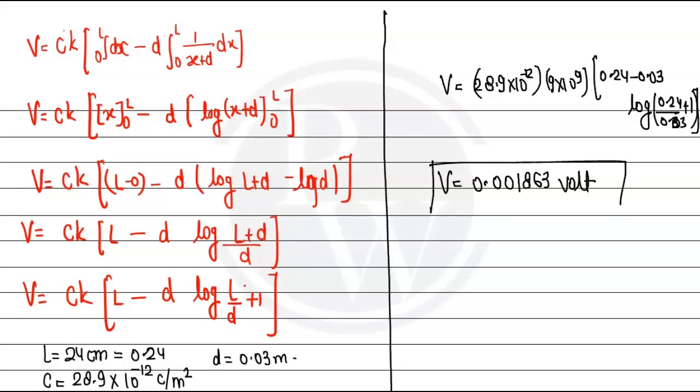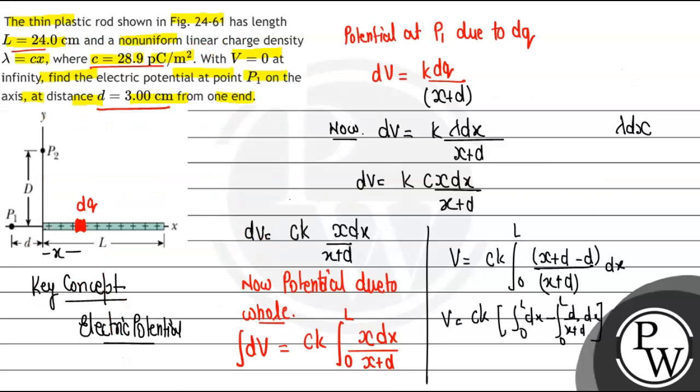And this is the potential due to this long plastic rod at the point P1 on its axis. So this is the answer for this question. I hope you understand it well. Best of luck, thank you.